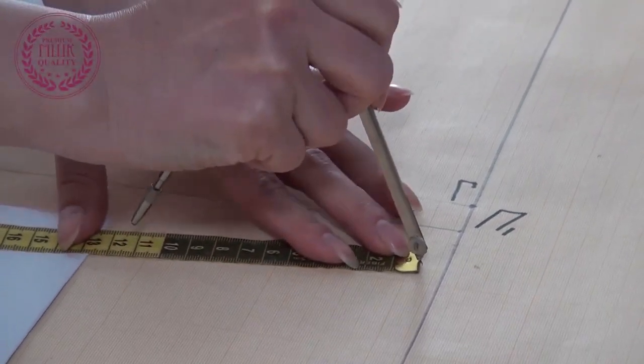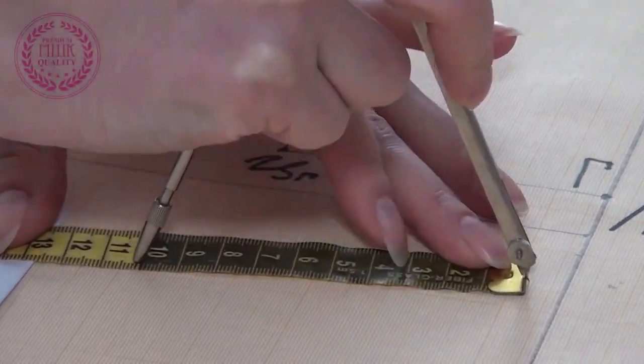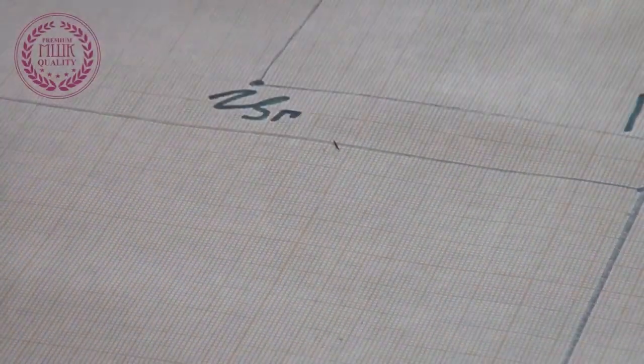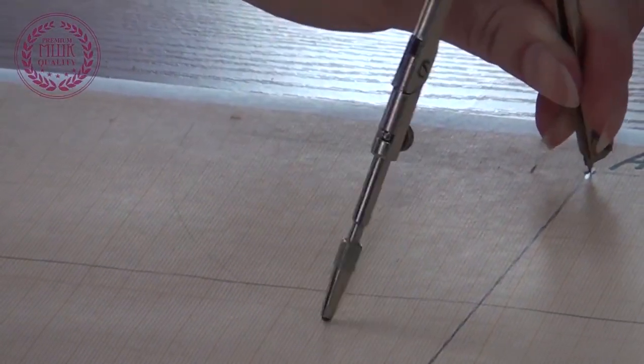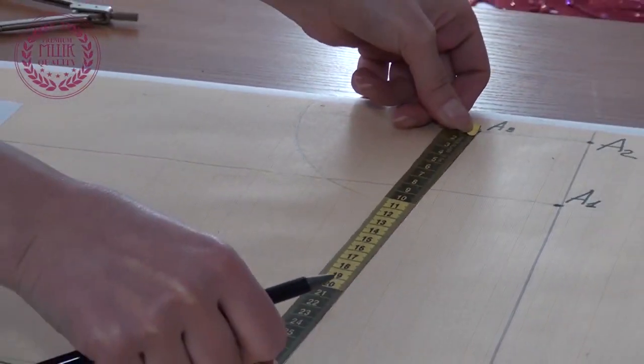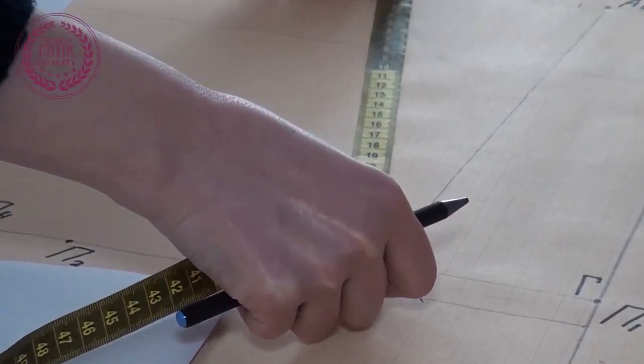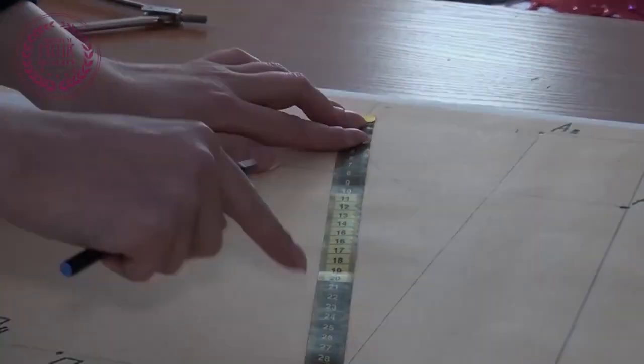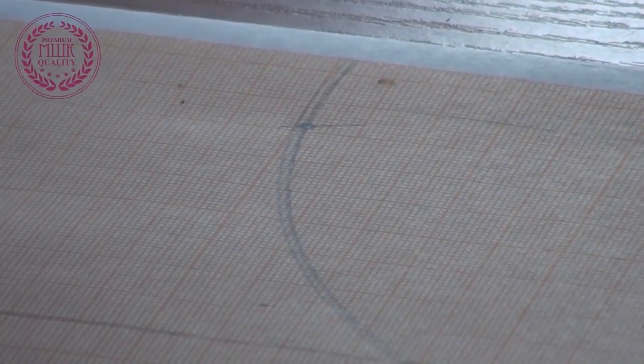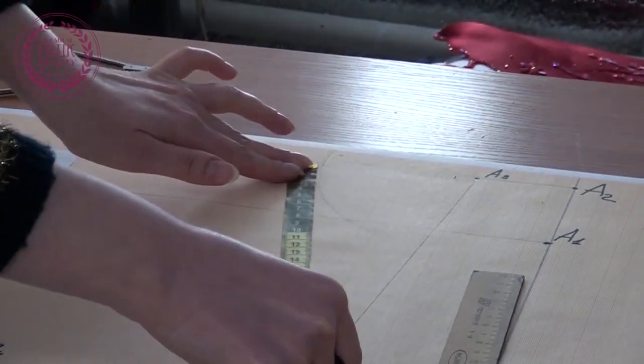I open the side of the compass to the length of this measurement. For example, 10 cm and make an arc from point A3. I measure the length of the line from point A3 to the bust point and make a second arc with a cm tape until it intersects with the first arc. This is point A4.